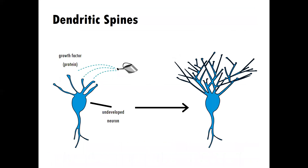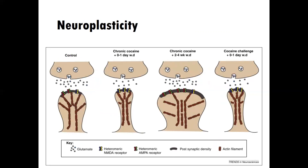We'll learn about what happens to dendritic spines with addiction processes and how they can grow in terms of the structure of the dendrite. We'll also look at the growth of receptors and what that means. We'll try to understand the neuroplasticity of addiction and what happens in recovery. In recovery, the person is often able to make quite a functional recovery in terms of neurotransmission. However, when a person relapses, their dendrites move very quickly back to the way they were during active addiction.